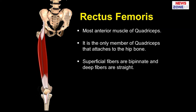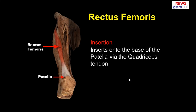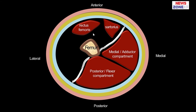Rectus femoris is the first muscle, the most superficial among the quadriceps in the anterior compartment. It is the only member of the quadriceps attached to the hip bone. The superficial fibers of rectus femoris are bipennate and the deep fibers are straight. The origin comes from two heads: the straight head from the upper half of the anterior inferior iliac spine, and the reflected head from the groove above the margin of the acetabulum and the capsule of the hip joint. The insertion is by the quadriceps tendon to the patella and then to the tibial tuberosity as the patellar ligament.